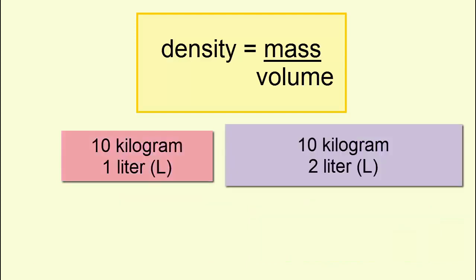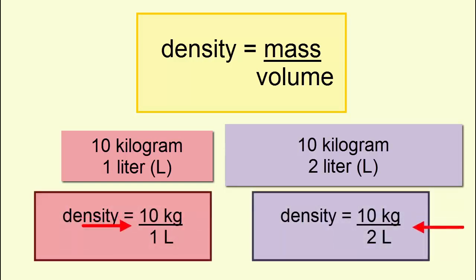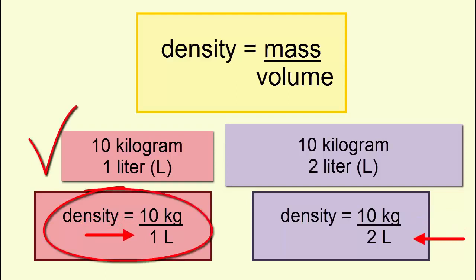Now imagine two objects of the same mass but different volumes. Same numerator, different denominators. Which is denser? The object with the smaller volume denominator is the denser one.